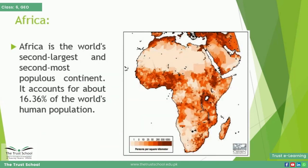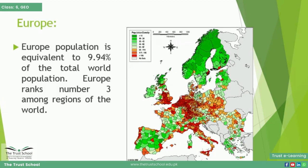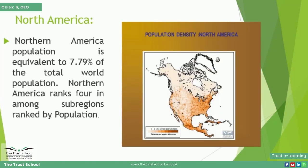At number two is Africa, where 16.36 percent of the world's total population lives. Next is Europe, where 9.94 percent of the world's total population lives. At the next position, 7.79 percent of the world's total population lives.